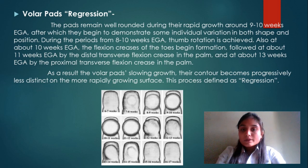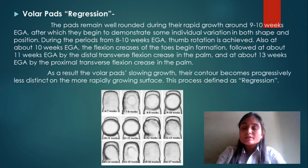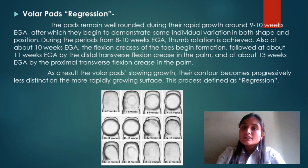As a result, the volar pad's slowing growth causes its contour to become progressively less distinct on the more rapidly growing surface — this process is defined as regression. When the volar pad is developed in rounded shape, then by 9 to 10 weeks proper fingers and thumbs give the hand its shape.